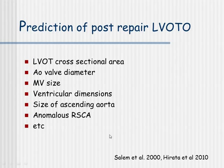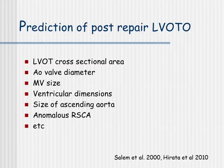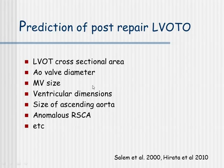Prediction of post-repair left ventricular outflow tract obstruction may be challenging. This lesion may be caused by various types of left ventricular outflow tract anatomy. In different publications, there's been some variance regarding risk factors, but the most common ones include: small left ventricular outflow tract cross-sectional area, aortic valve diameter, size of the mitral valve, ventricular dimensions, size of the ascending aorta, and anomalous origin of the right subclavian artery, all of which have been shown to be risk factors for obstruction.